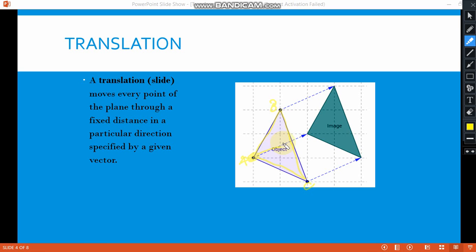For example, in real life, say you have a box here and you want to transfer this box to your table. That is what we call translation—you move it in a fixed distance in a particular direction.